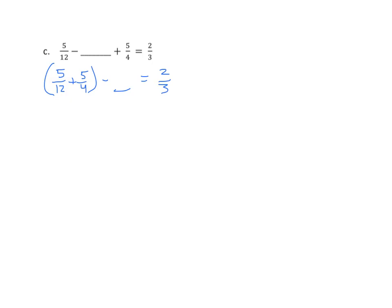I know that my sum here is greater than the 2 3rds. How much bigger is it? Once we answer that question, we can fill in that blank right there. If we determine how much greater it is, this answer can be found by adding the sum of 5 12ths and 5 4ths and then subtracting 2 3rds. Then we'll find out how much greater it is than the 2 3rds, and that'll give us our answer.